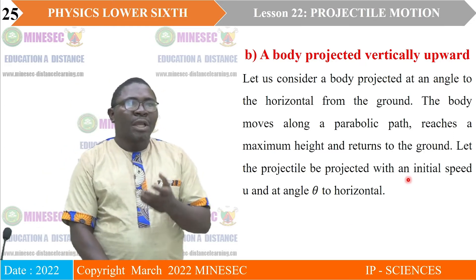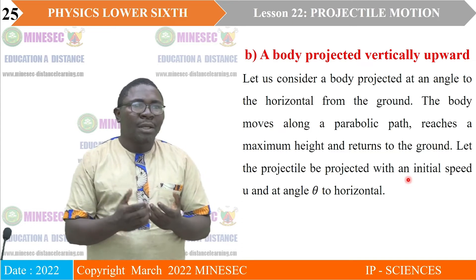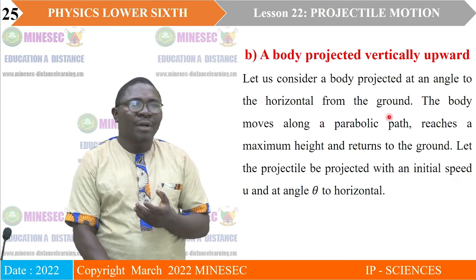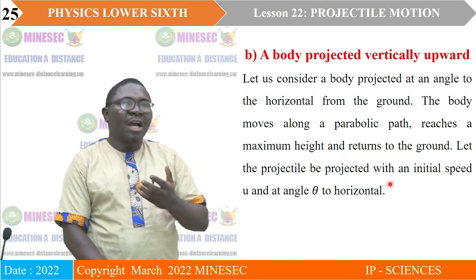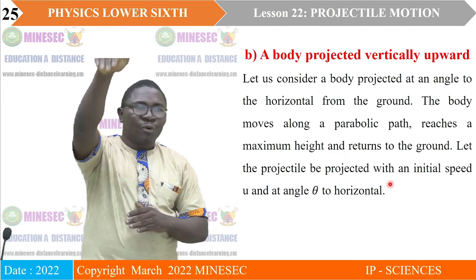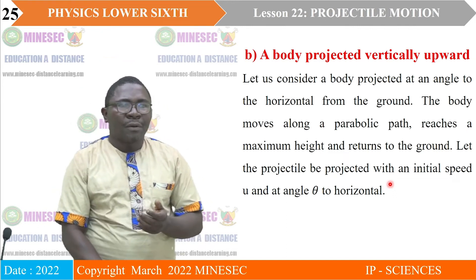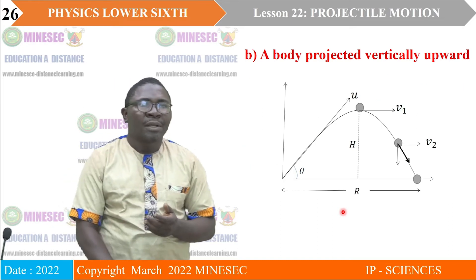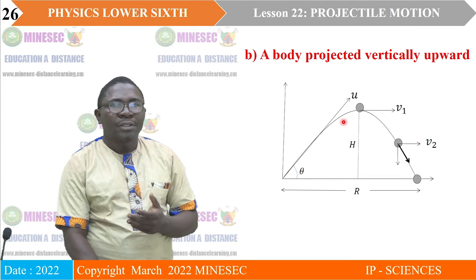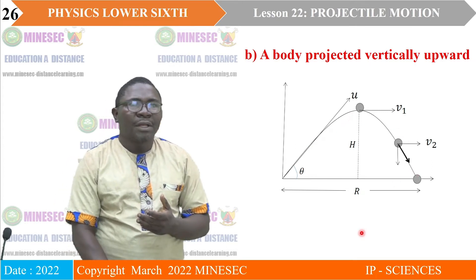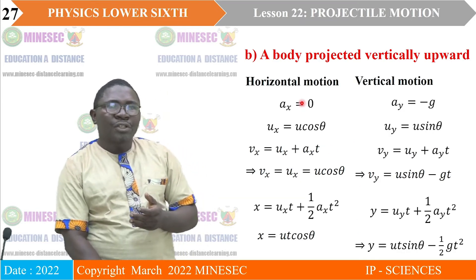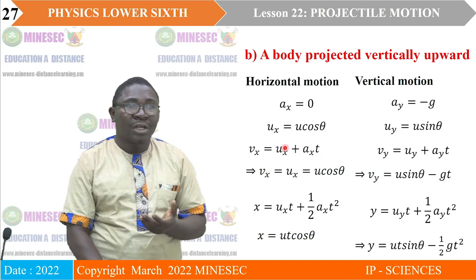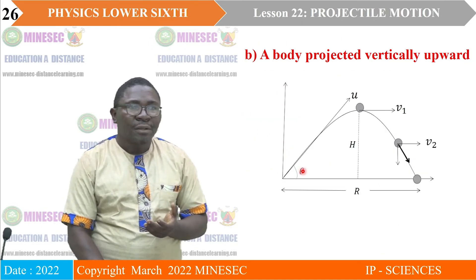Case B: a body projected at an angle upward. Consider a body projected at an angle theta to the horizontal from the ground. The body moves along a parabolic path, reaches a maximum height, and then returns to the ground. Let the projectile be projected with an initial speed u at angle theta to the horizontal — as shown in the figure. In the horizontal direction, there is no horizontal acceleration.